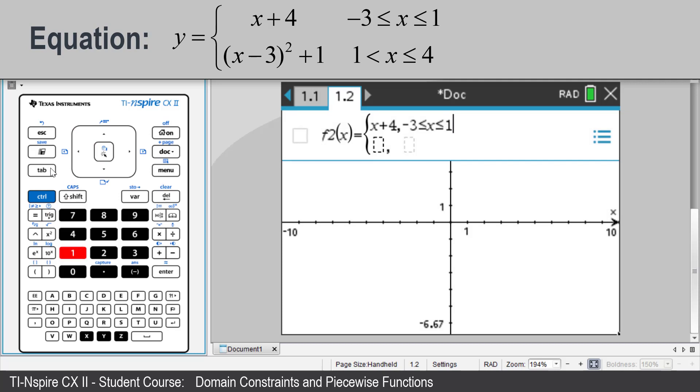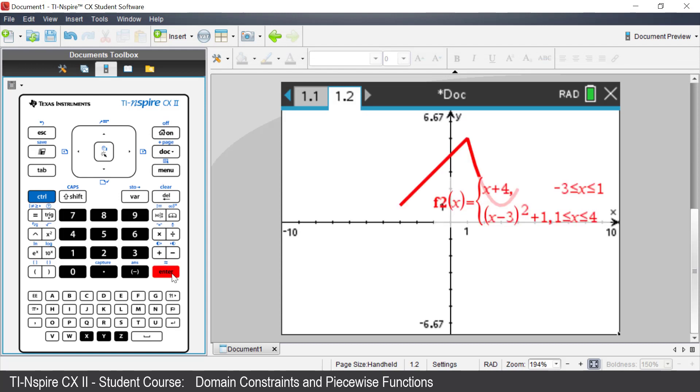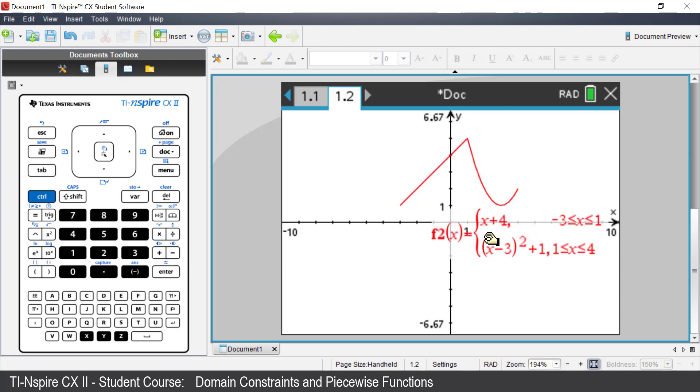Press the tab and enter in brackets. We are going to x minus 3. Use your arrow key to go outside the brackets. Squared plus 1. And the restricted domain is 1 through to 4.